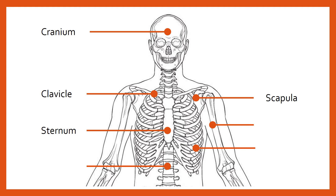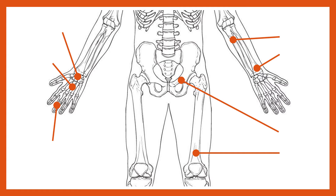Right down the center of the body we have the vertebral column, commonly called the spine, which we'll look at in more detail in just a moment. The bone of the upper arm is the humerus — and that's why it's sometimes known as the funny bone, because it's humerus. And of course we've got the ribs.